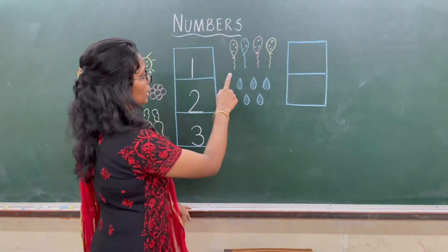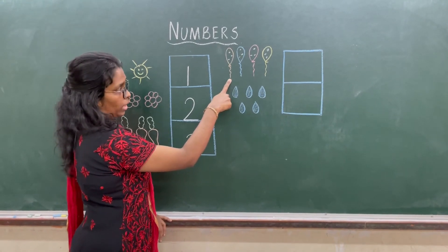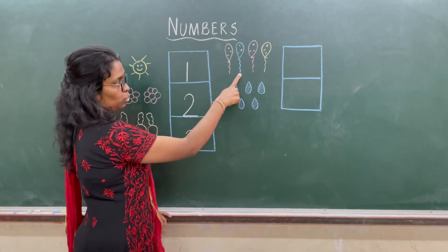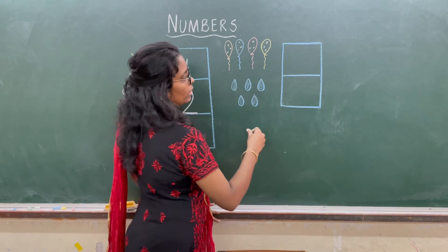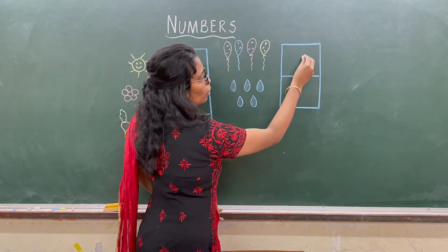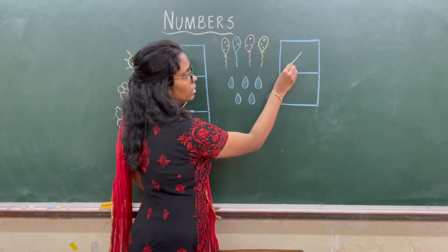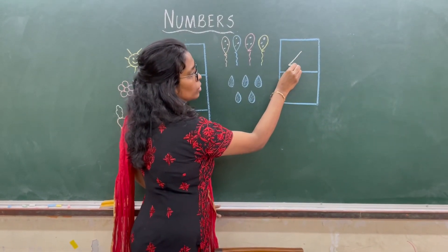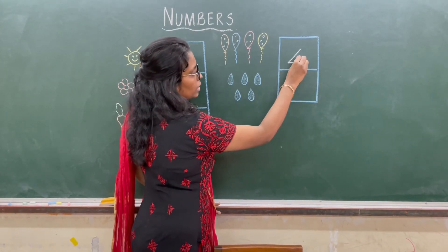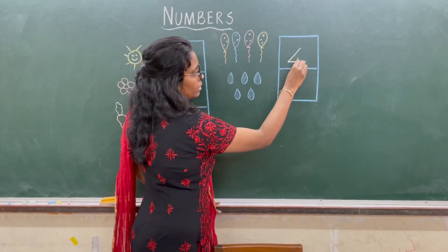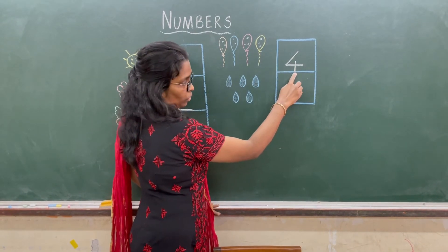Now next — let's see what are these? Balloons: 1, 2, 3, 4. So how do we write the number 4? Slanting line, horizontal line, and a vertical line, touching the line down.